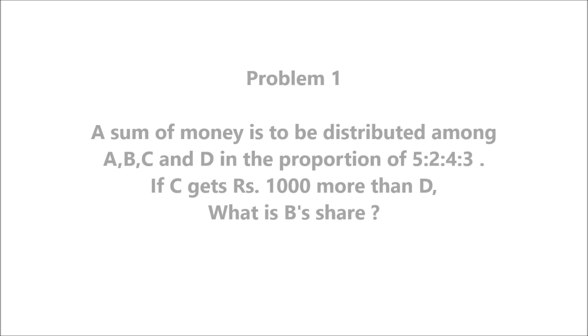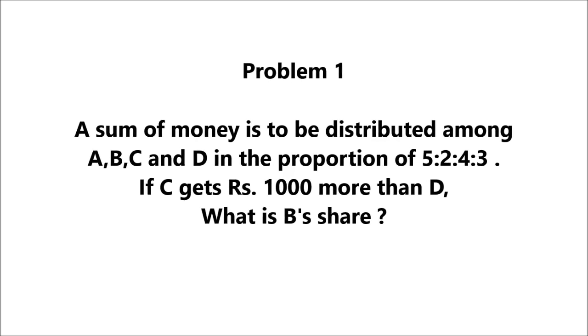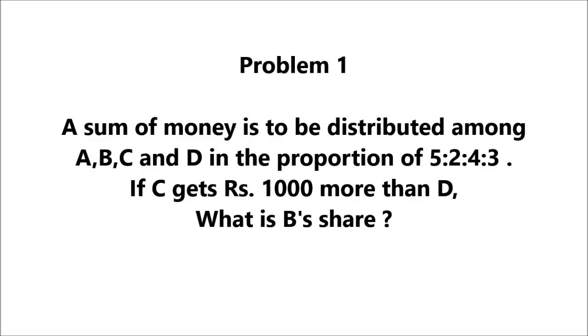Here's your first problem. Problem 1: A sum of money is to be distributed among A, B, C, and D in the proportion 5:2:4:3. If C gets 1000 rupees more than D, what is B's share?